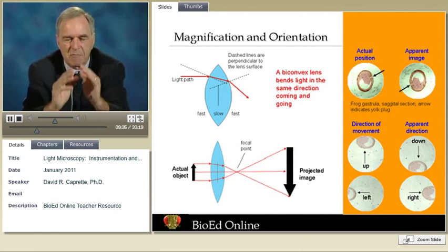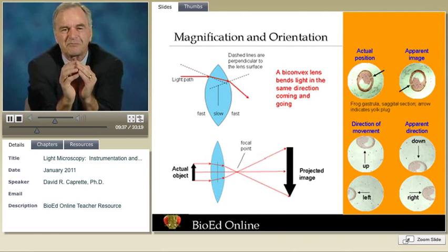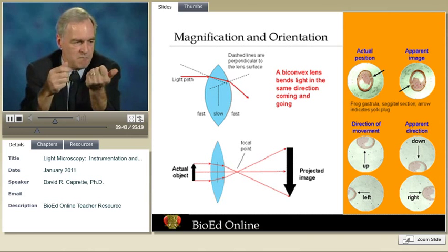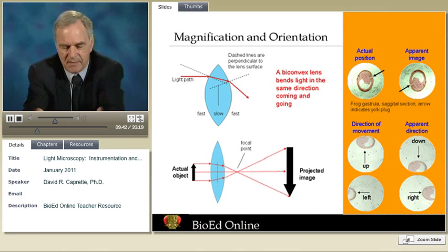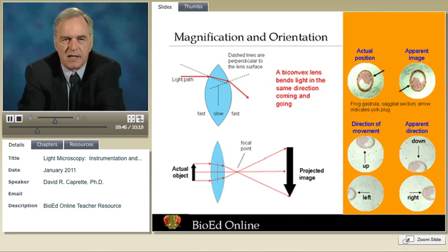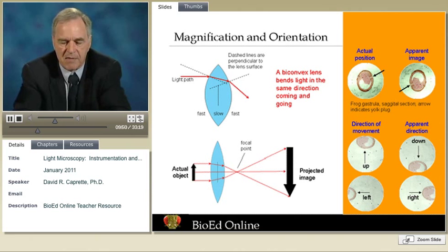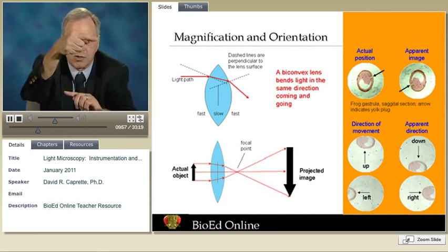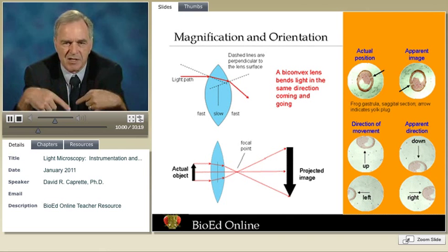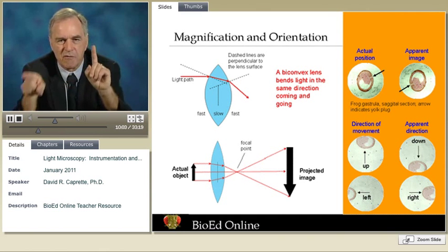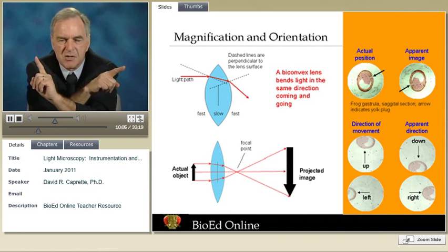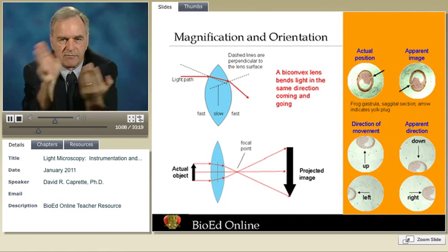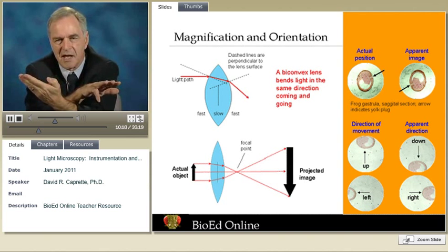There is a consequence of having double-convex lenses. If you place something asymmetrical — an arrow or the letter E — in the light path, the double-convex lens, by nature of the crossover, inverts the image. What is right side up becomes upside down, and it also reverses it from left to right. So the letter E would be upside down and flipped, as though it was an upside-down mirror image.